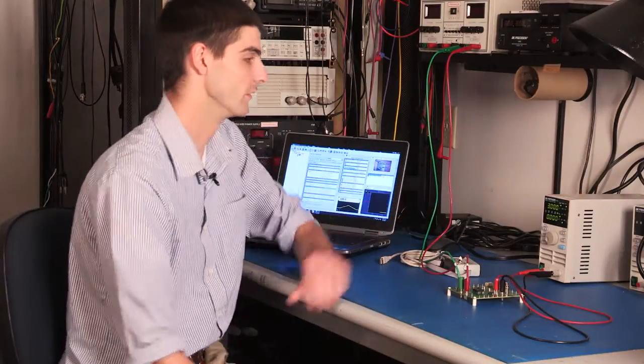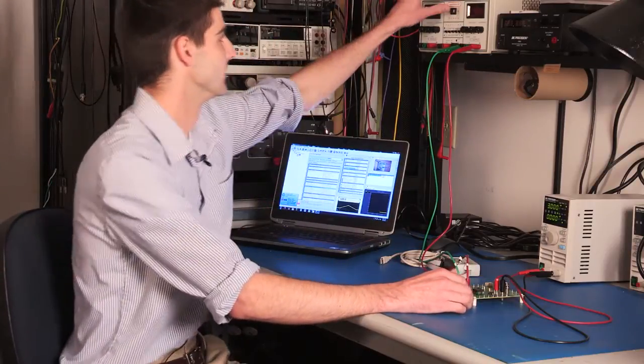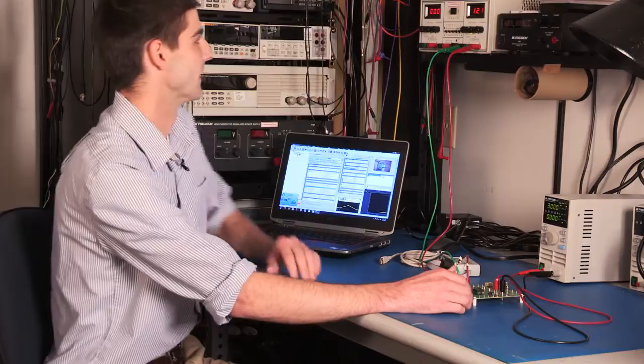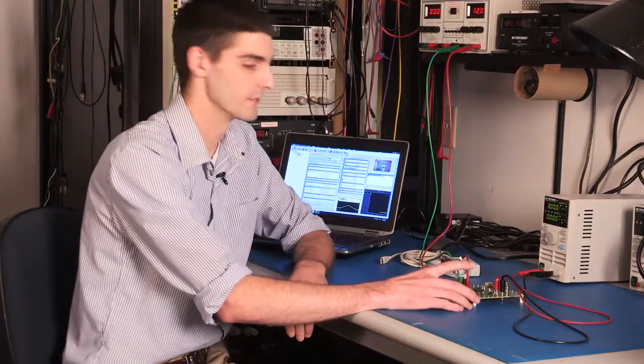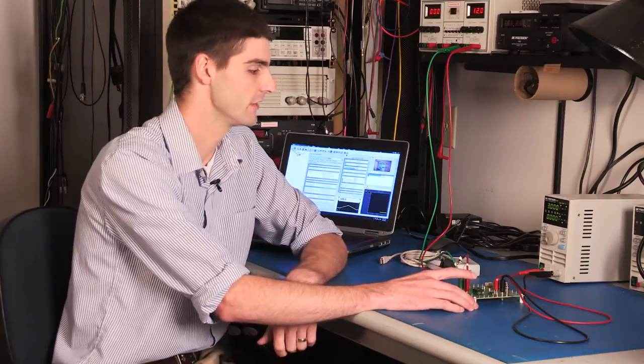We're shooting this video in the lab so that I have access to an electronic load. The electronic load will allow us to draw a constant current from the regulator. We'll go ahead and fire up this bench supply which will serve as the input source to the regulator. I currently have it set to 12 volts, which is right in the middle of that acceptable voltage range.